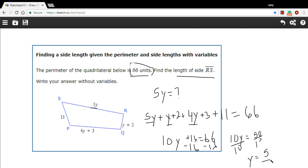Now, I can take this value for y and plug it in here. And that would be 5 times 5. So that is 25. So the length of side RS is 25 units.